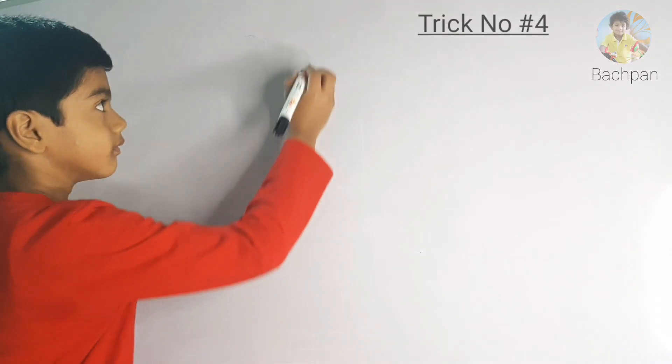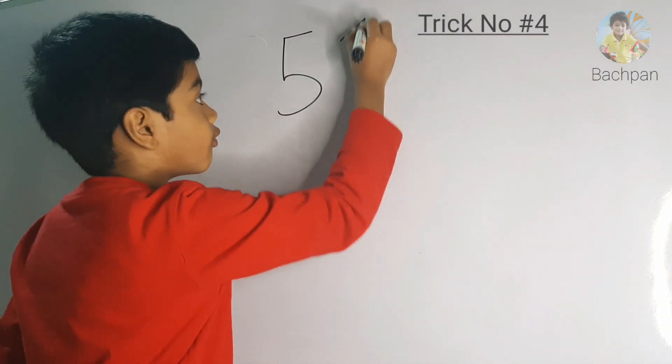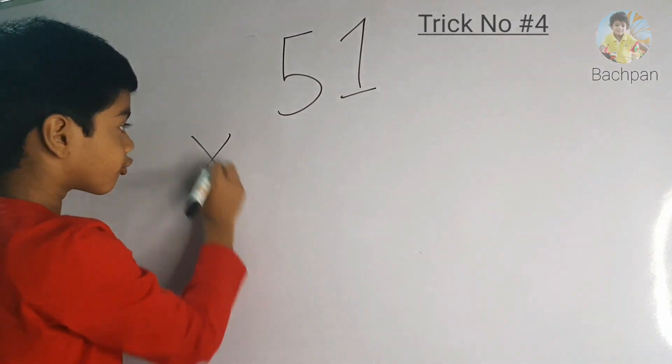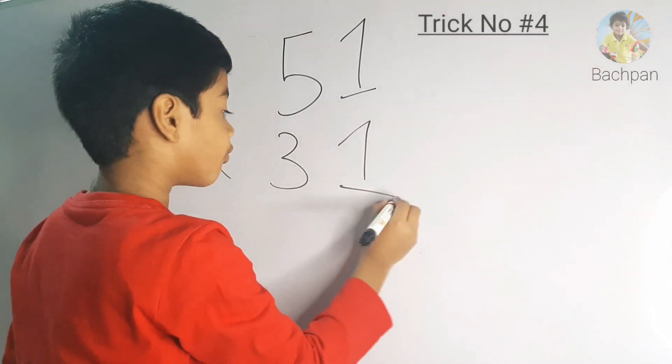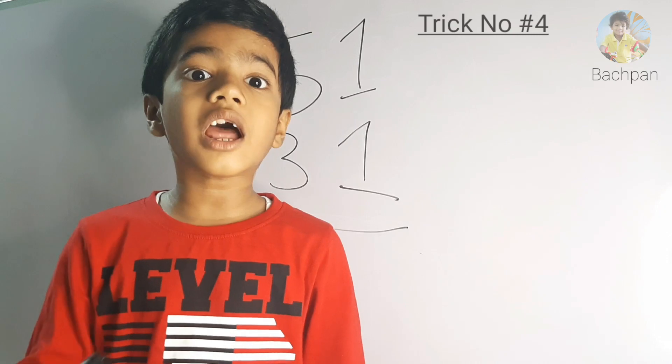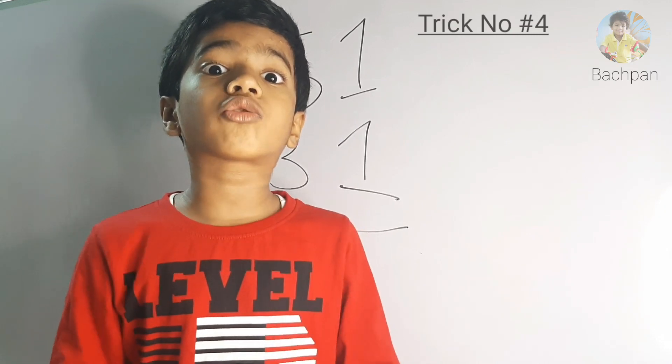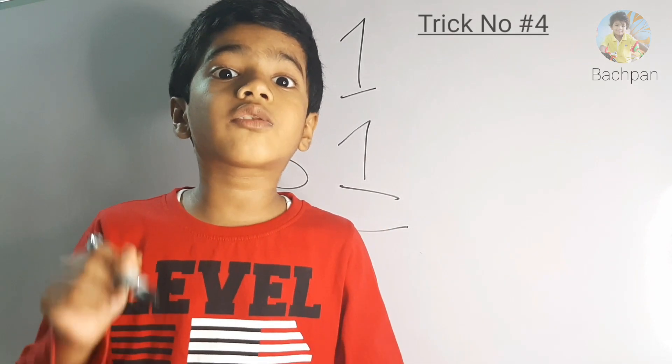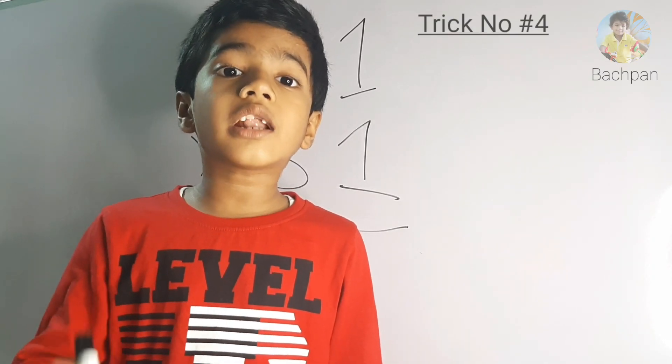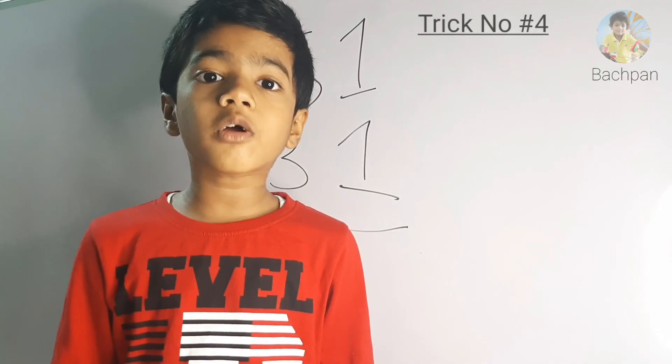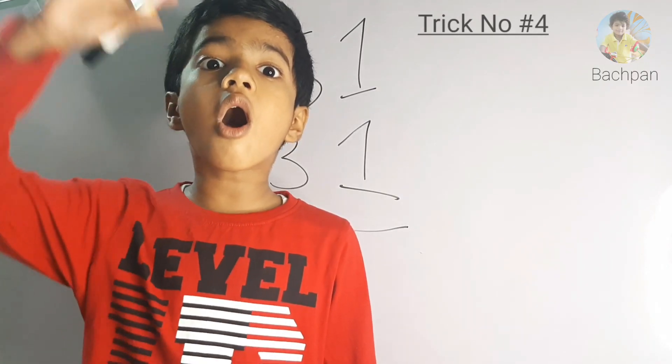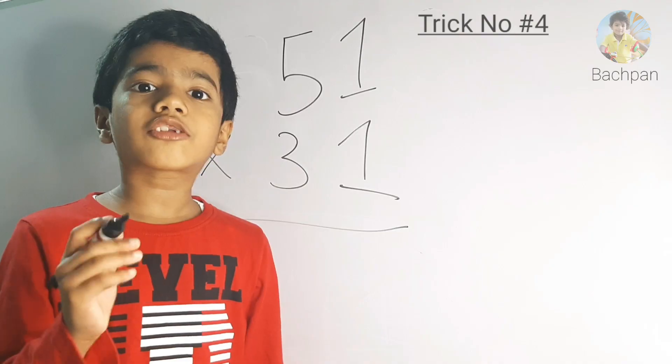Vedic math trick number 4. Now let's multiply any 2-digit number ending with 1. Now let's take an example, 51 into 31. There are 16 sutras in Vedic math. This sutra is called Ekadhikena Purvena. I will upload the video for all 16 sutras. Let's go back to the trick.